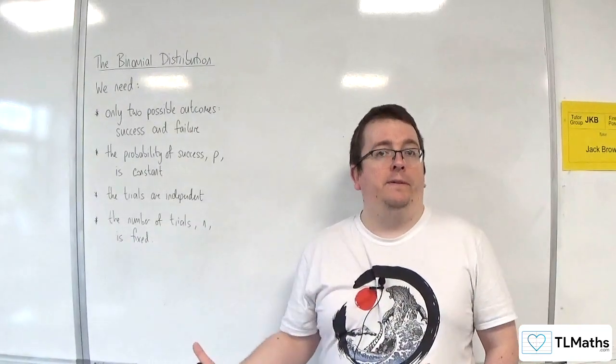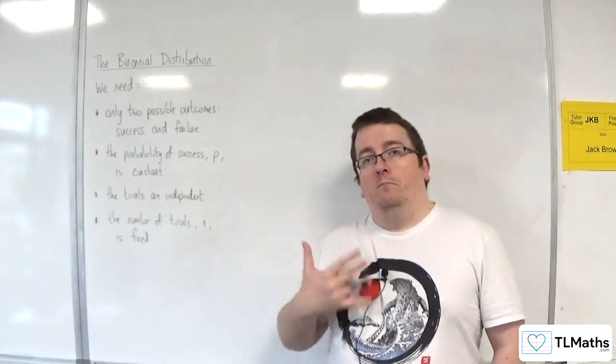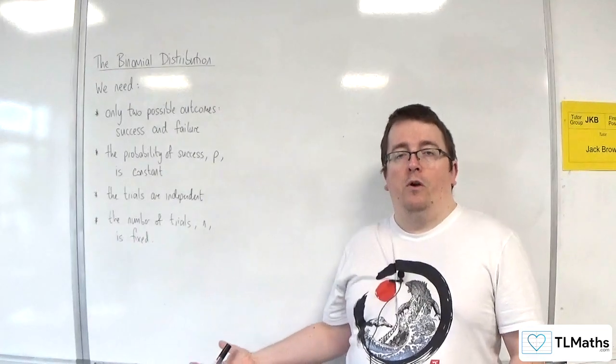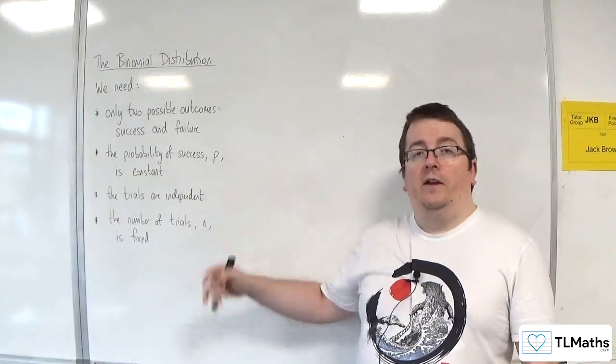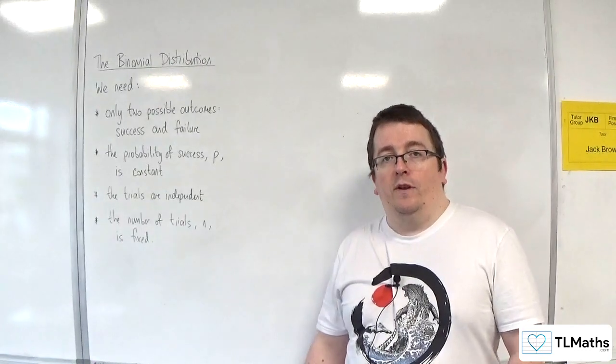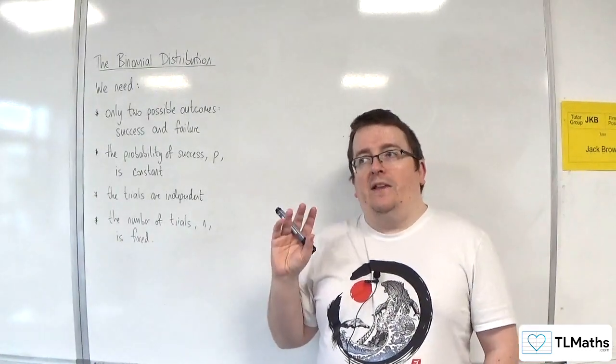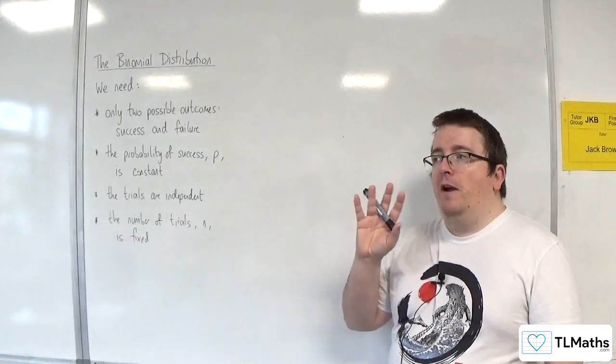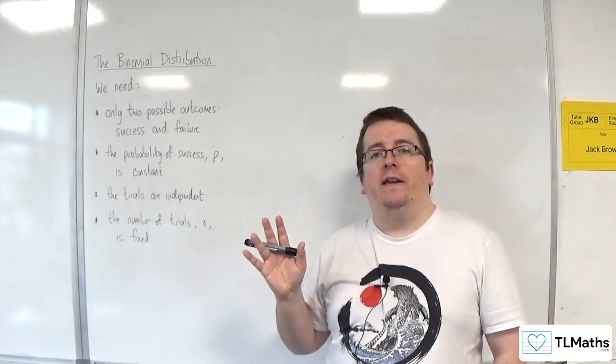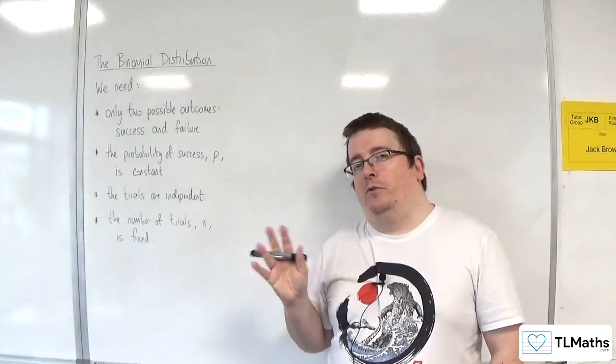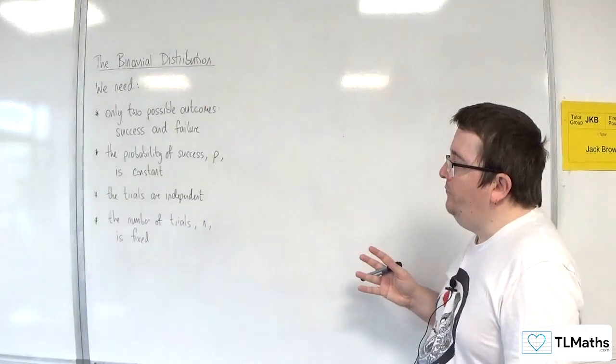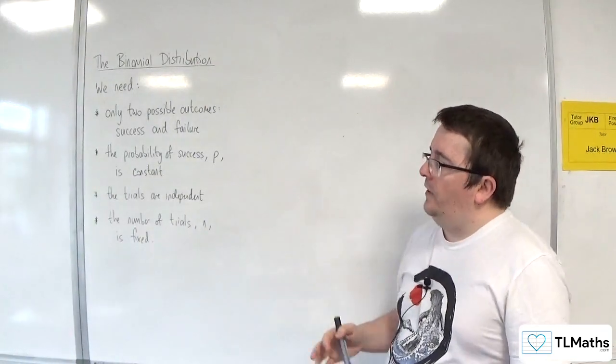Then you might suggest that actually, with practice, they get better. In which case, the more arrows they throw, the better they're going to get, and the probability of success will probably increase. So it's one of those things where you might have to think about, contextually, does the model appear to be right or not? You might need to discuss that.